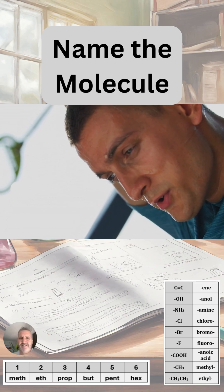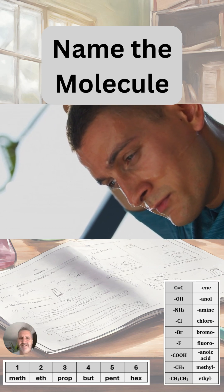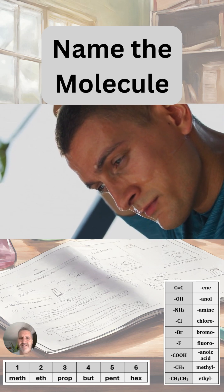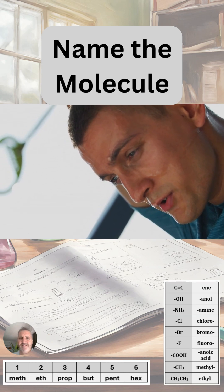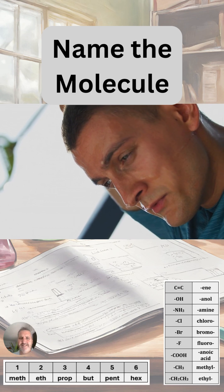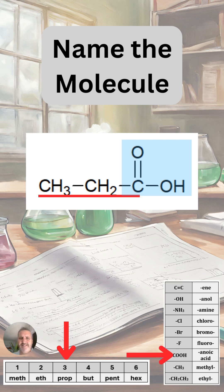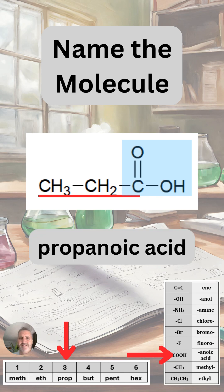Interesting fact: when you go and exercise, you sweat. In your sweat glands, you actually produce a type of acid that is somewhat responsible for the smell of body odor. This acid has three carbons, and we can see here it has a carboxylic acid functional group — a carbon with a double bond oxygen connected to an OH group. So this is going to have the ending '-anoic acid', and with three carbons, this molecule is going to be called propanoic acid.